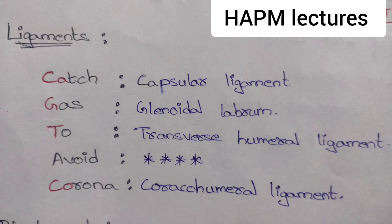Mnemonics of shoulder joint — let's discuss the ligaments. The mnemonic is 'catch gas to avoid corona': C for capsular ligament, G for glenoidal labrum, T for transverse humeral ligament, and CO for coracohumeral ligament.